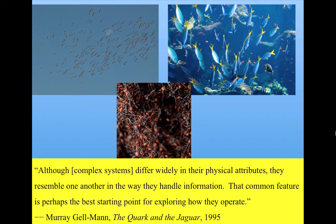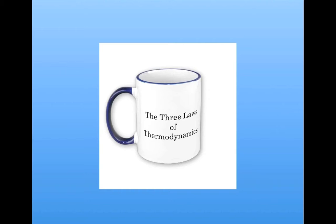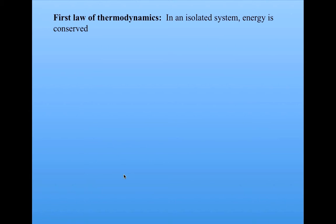In this unit, we'll look at some ways in which information can be quantified. Historically, the mathematical structure of information starts with the laws of thermodynamics. The first law simply says that in an isolated system, energy is conserved. An isolated system is one in which no energy can be added from outside the system, or can escape outside the system.